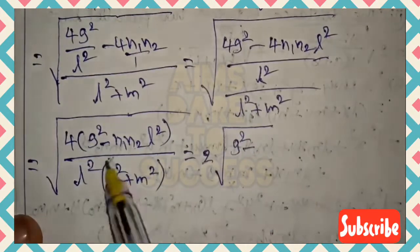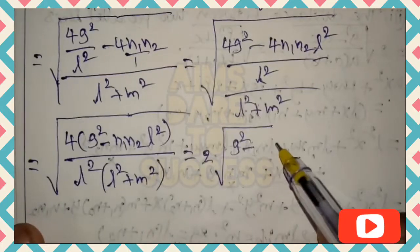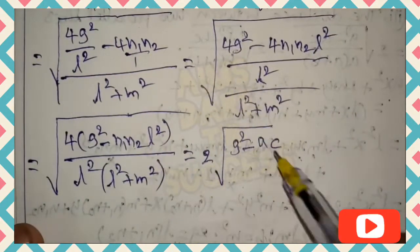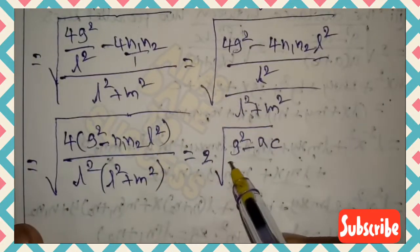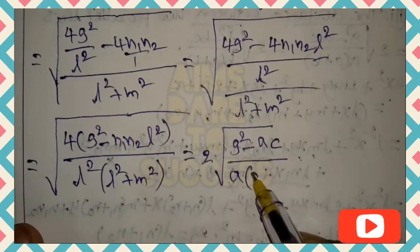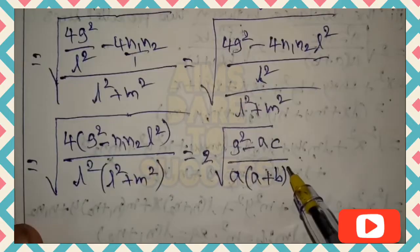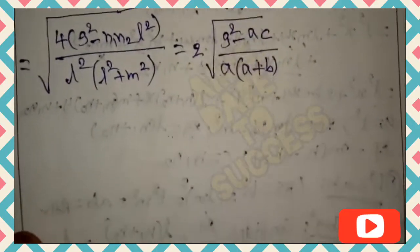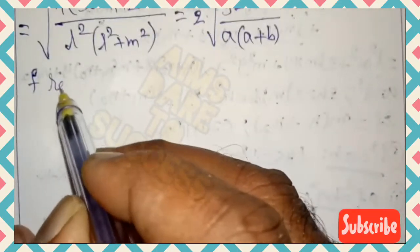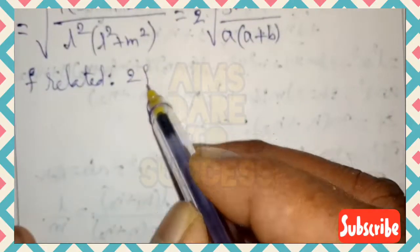Factoring out 4 from the numerator gives 2√(g² − n₁n₂) / √(l²·(l²+m²)). Since n₁n₂ = c, l² = a, and m² = b, we get 2√(g² − ac) / √[a(a+b)], completing the g-related distance proof.